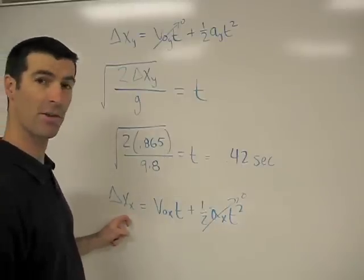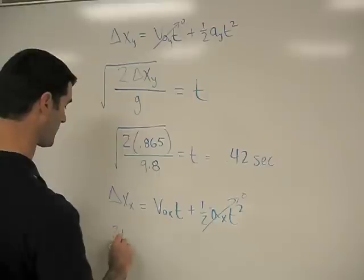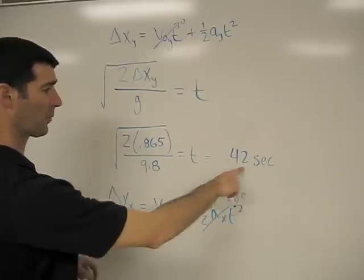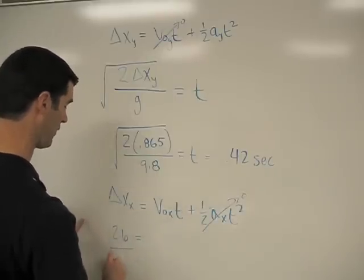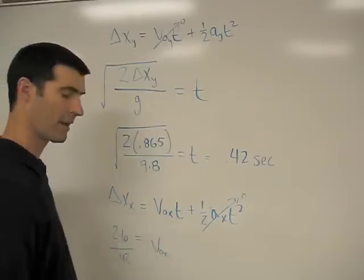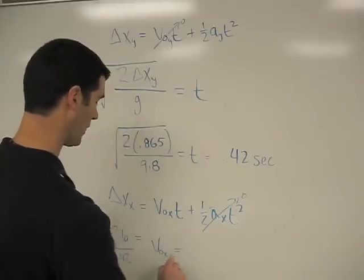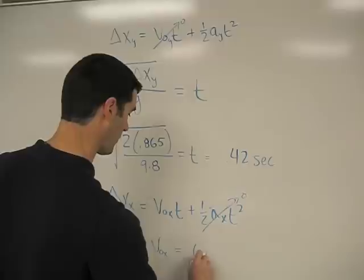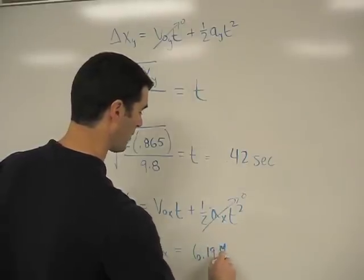We measure the distance how far it was to where it landed, which was 2.6 meters. And we know the time was 0.42 seconds. We can divide that, over 0.42, should give us our original v-naught in the x-direction, which on the calculator, that comes out to be 6.19 meters per second.